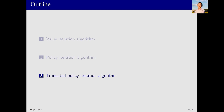Just now, we discussed policy iteration and value iteration, two fundamental algorithms in reinforcement learning. Next, we introduced the third algorithm, truncated policy iteration.